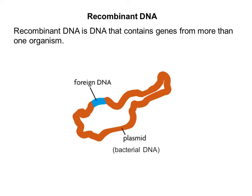To understand how some genetic engineering works, you need to know some vocab. One of the terms is recombinant DNA, and you can really break that down to recombined DNA — it's DNA that contains genes from more than one organism. An example is this plasmid, which is bacterial DNA, with foreign DNA inserted into it.